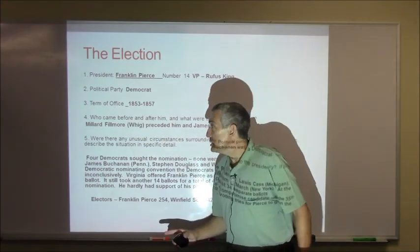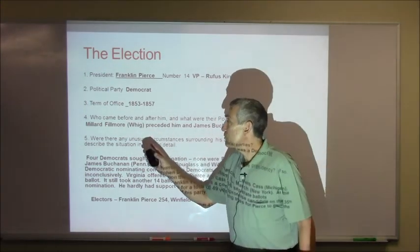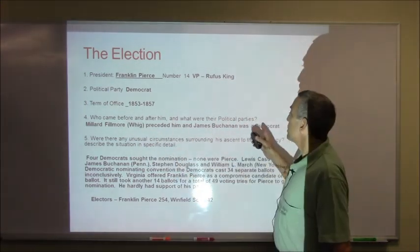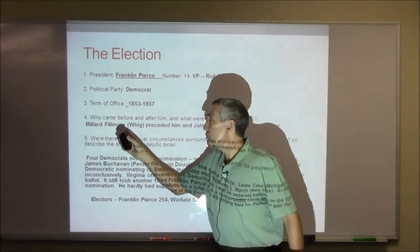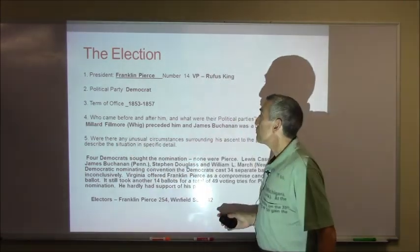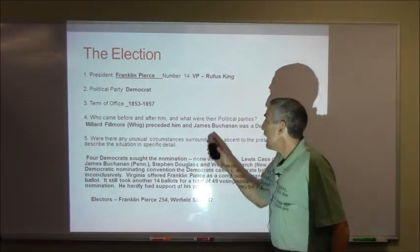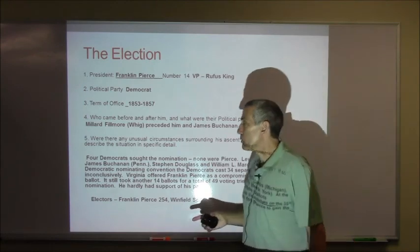Term of office 1853 to 1857. Who came before him and after him, and what were their political parties? Millard Fillmore was a Whig before Franklin Pierce, and James Buchanan followed him and he was a Democrat.